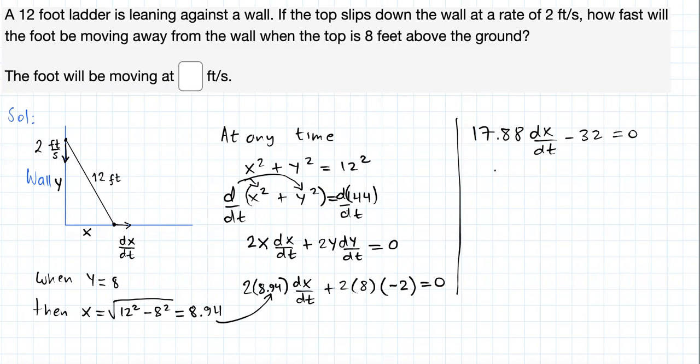Transposing 32 to the right side, or equivalently adding 32 to both sides of this equation, we get this. And finally, isolating dx dt, dividing both sides by 17.88, we should get this, right? For dx dt.